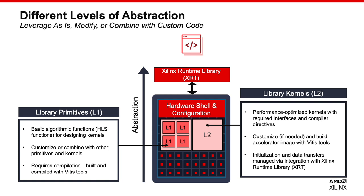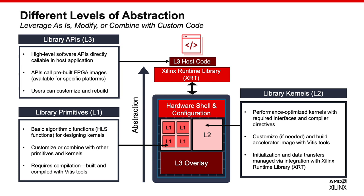You can also run L2 functions directly on supported hardware after building the acceleration. The highest level is the library API, what we call L3 functions. They can be directly called in the host application — they are pre-built FPGA binaries, ready to be called from host code via a library API call. You can also rebuild this L3 function with specific changes for your own unique applications. In summary, you can use the VITES libraries as algorithm building blocks, modify them to suit your specific needs, or use the source code as a reference to complete your own kernels.